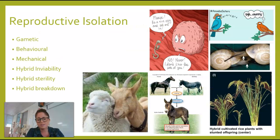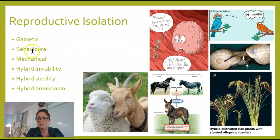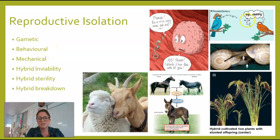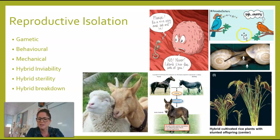The last isolating mechanism is reproductive isolation. All of the others will lead to reproductive isolation. This could be due to the gametes not being able to recognize each other — the sperm can't penetrate the egg, which is a gametic form of isolation. Behavioral isolation could be two birds where one sings a slightly different song and the other doesn't recognize it. A mating dance would be another example of a behavioral isolating mechanism.